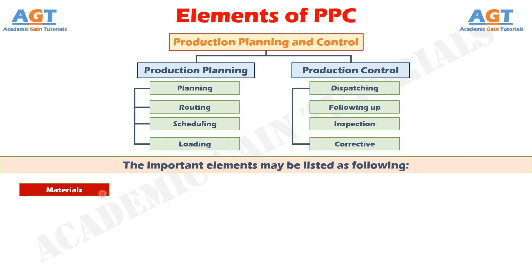storage, inventory control, standardization, variety reduction, value analysis and inspection are the other activities associated with material. Number 2: Method. Choosing the best method of processing from several alternatives.